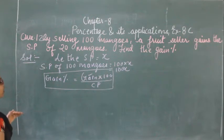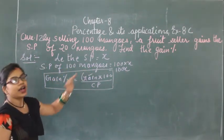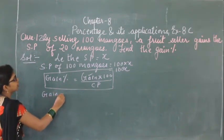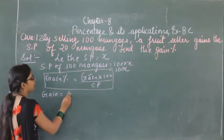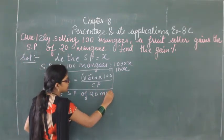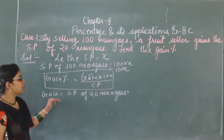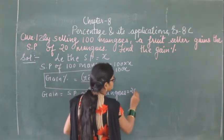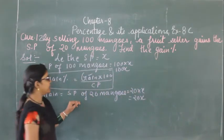The selling price of 100 mangoes is equal to 100X. The gain is equal to the selling price of 20 mangoes. So on selling 20 mangoes we get the gain, that is 20 into X, which equals 20X.